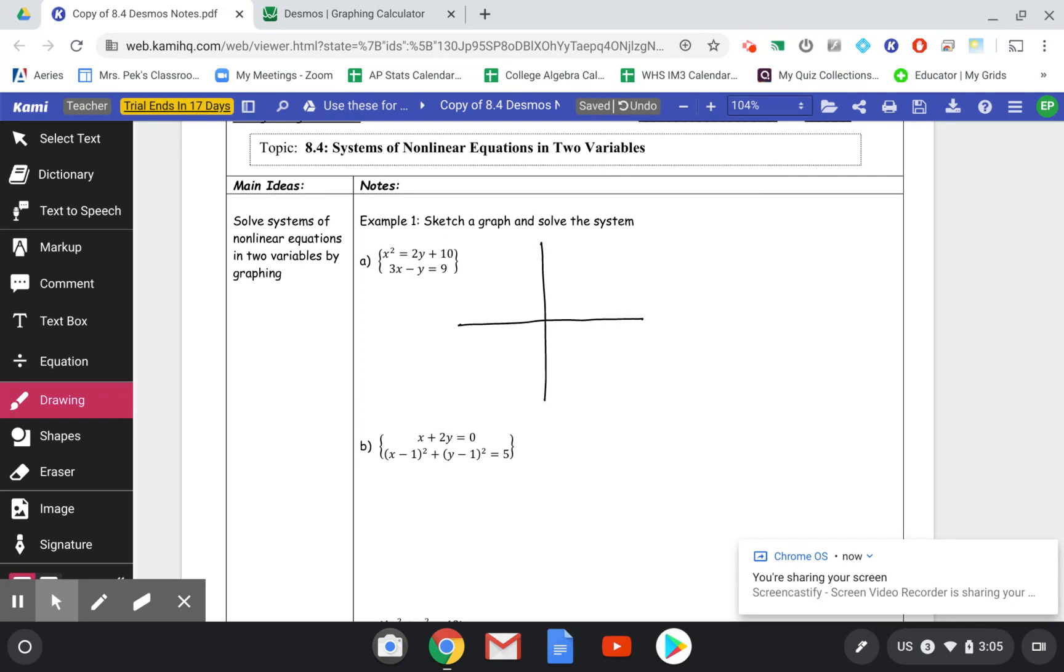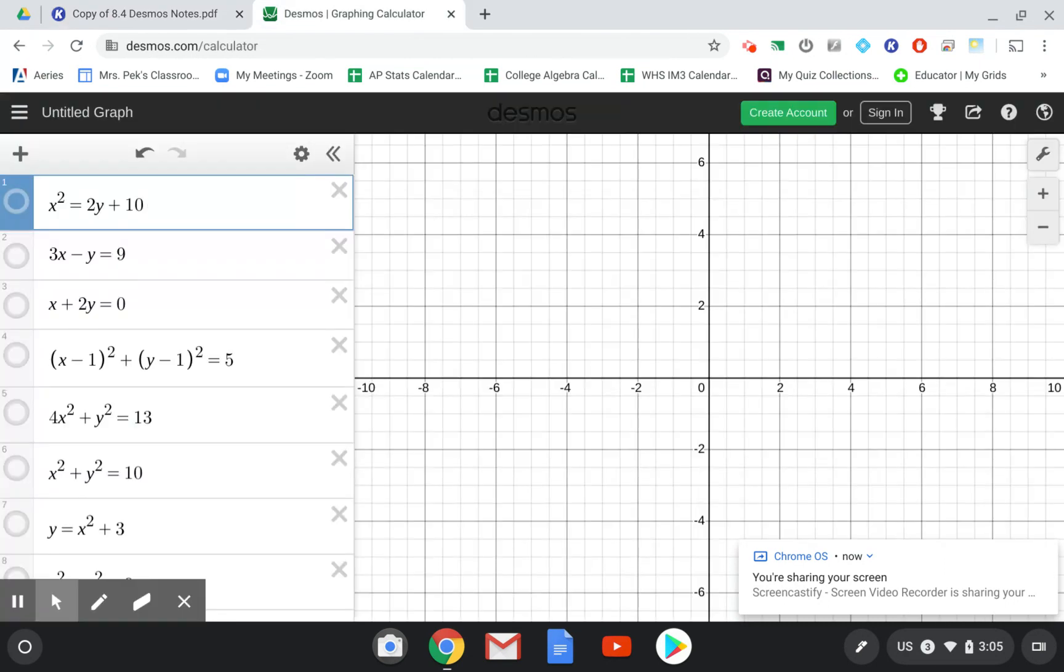So the first one, we have x squared equals 2y plus 10, and 3x minus y equals 9. I have typed these in already to save us some time. So here is x squared equals 2y plus 10, and the line 3x minus y equals 9. And we can see that we have a line here in blue, a parabola in red, and they cross each other in two places: the point 4, 3 and the point 2, negative 3.